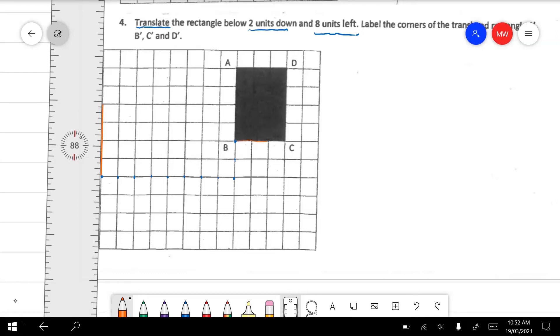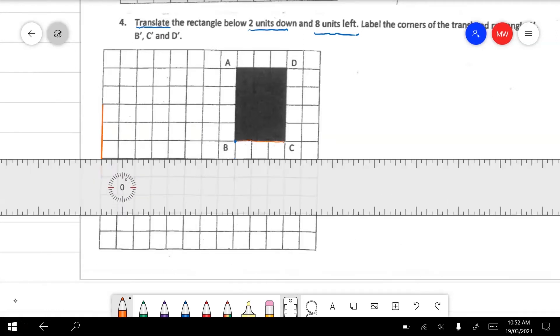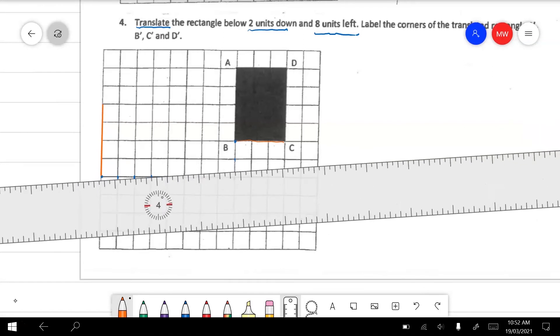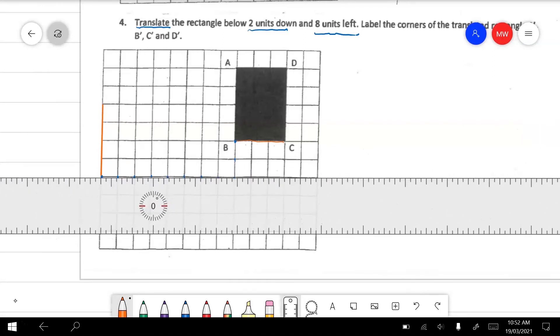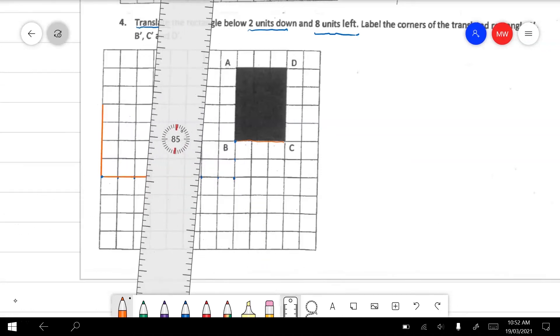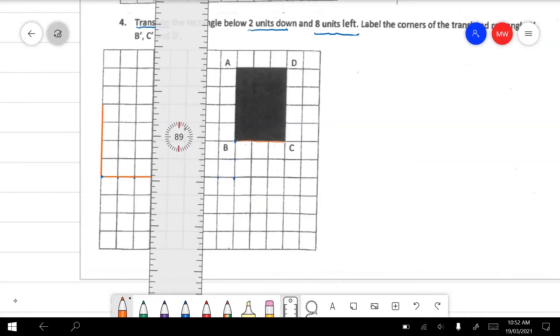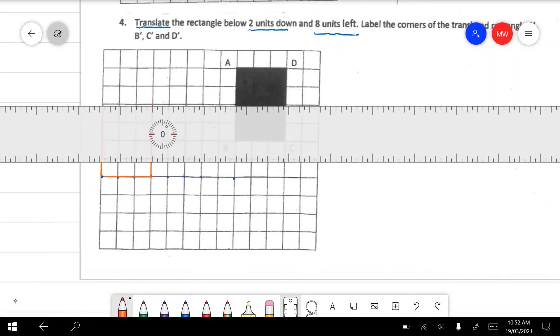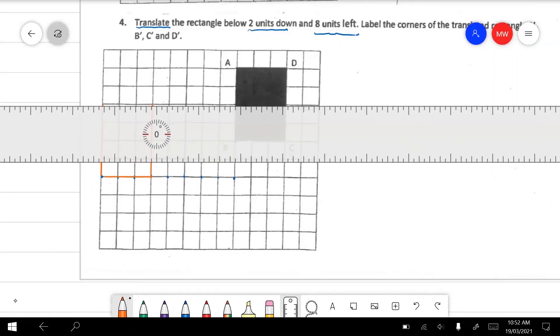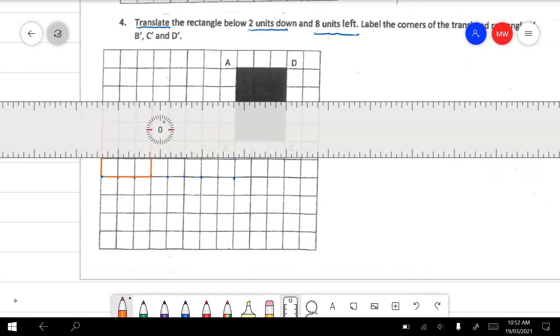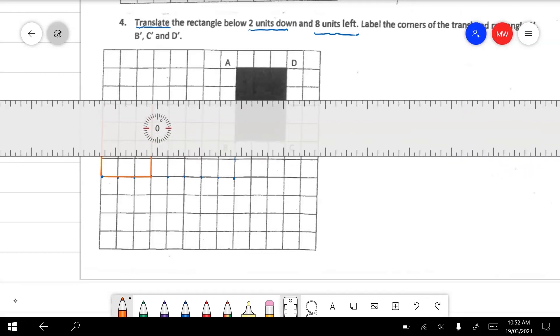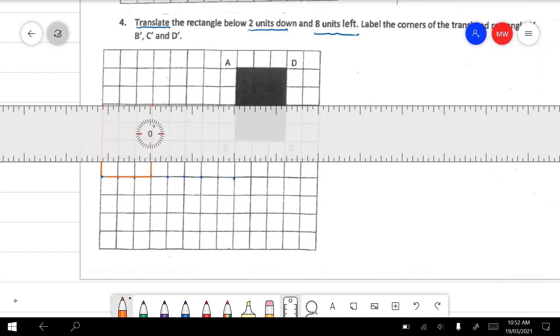Now if this was a more complicated shape, you might have to move each of the four corners. But because this is a nice shape that we can count easily, we'll just cheat a little bit. And we'll just take the one point and then draw the shape. This ruler is really not cooperating.